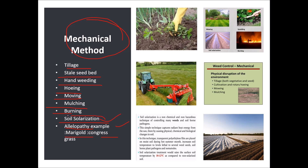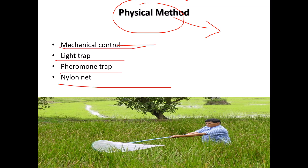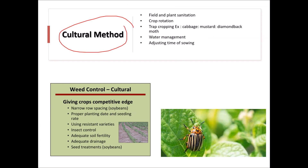Soil solarization is a non-chemical, non-hazardous means of controlling weeds and soil-borne pathogens. It captures radiant heat energy from the sun, causing physical, chemical, and biological changes in the soil. Physical methods include installing pheromone traps, light traps, mechanical control traps, and nylon nets to prevent infestation. Cultural methods for pest management include sanitation, crop rotation, and trap cropping — for example, using cabbage or mustard to trap insects like the diamondback moth. Other cultural practices include water management, adjusting sowing time, insect control, adequate soil fertility, and adequate drainage.